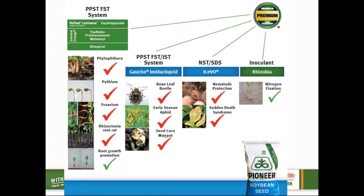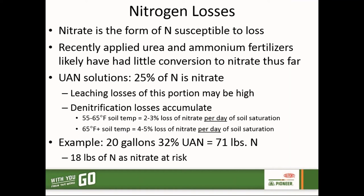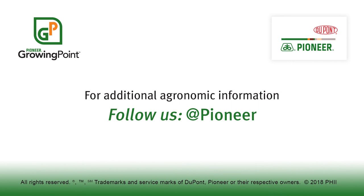Lumicina provides next-level protection against Phytophthora root and stem rot within soybeans, which occurs more in wetter and moderate-to-warmer soils. With the warm conditions and rainfall we had recently, for any beans planted ahead of that rain we might have heavier Phytophthora pressure based on temperature and soil conditions, so Lumicina should help provide more protection in those situations. That concludes this Pioneer Growing Point agronomy video podcast — visit our page on pioneer.com and follow us on Twitter and Facebook at Pioneer for more agronomy insights.